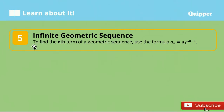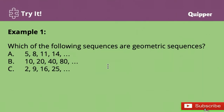To find the nth term of a geometric sequence, we will be using the formula: a sub n is equal to a sub 1 times the common ratio to the power of n minus 1. Now let's try some examples about geometric sequences.